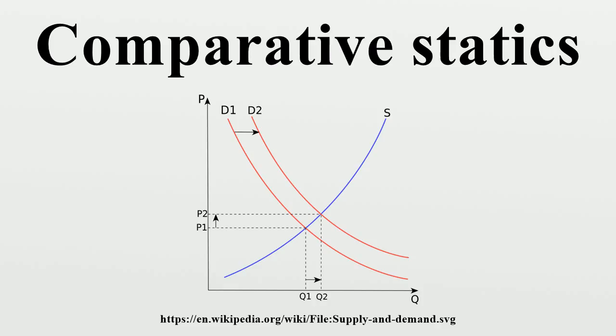Comparative statics results are usually derived by using the implicit function theorem to calculate a linear approximation to the system of equations that defines the equilibrium under the assumption that the equilibrium is stable.